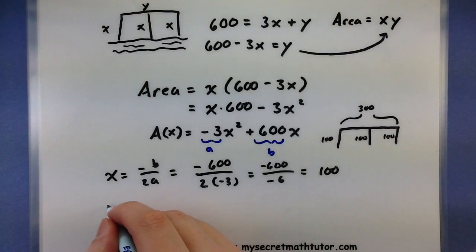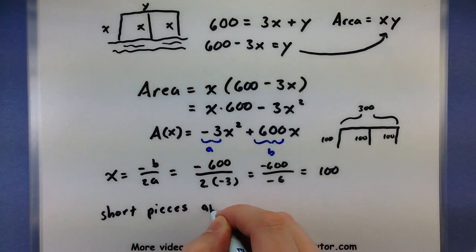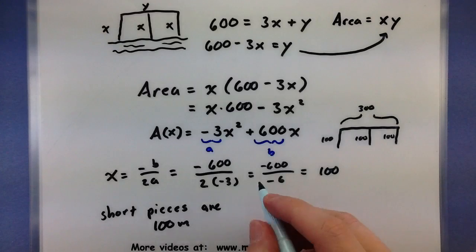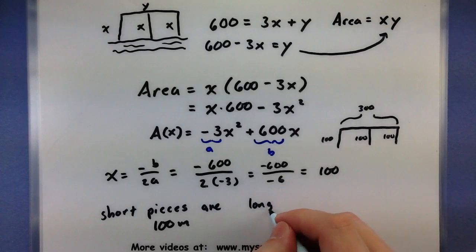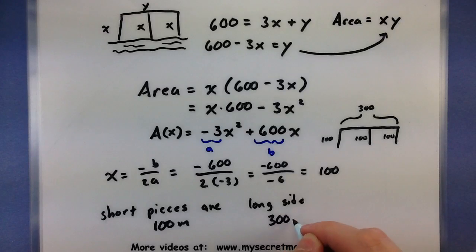So I could say that the short side, or short pieces, are 100 meters each. The long side, 300 meters.